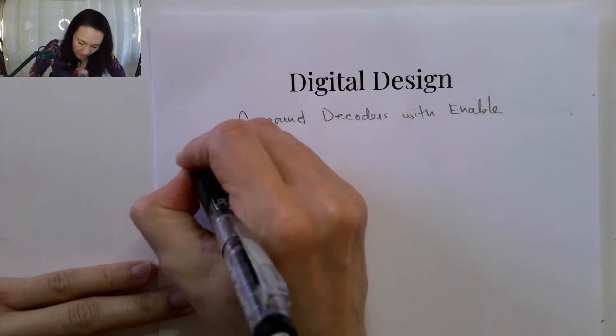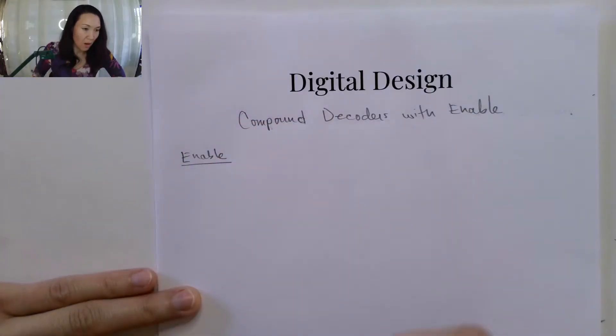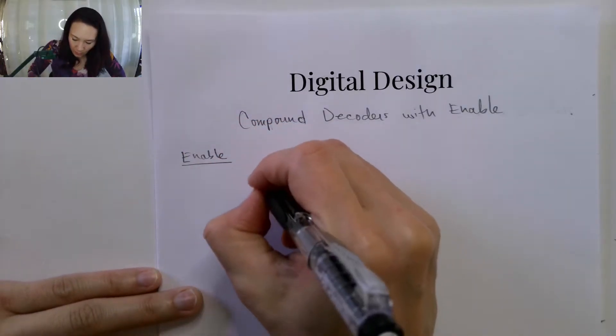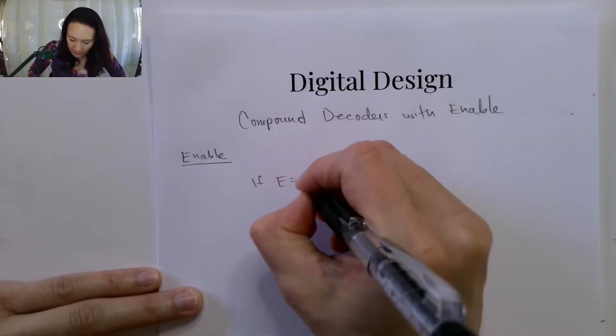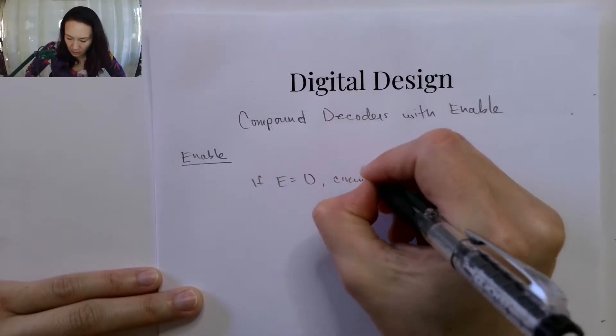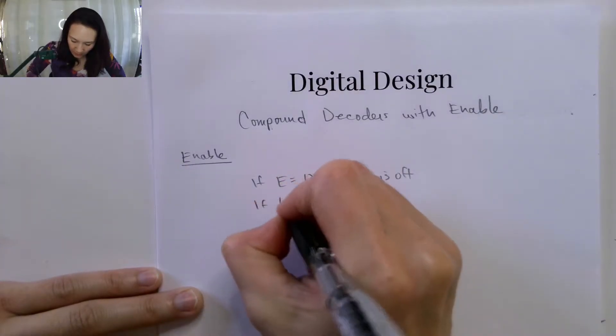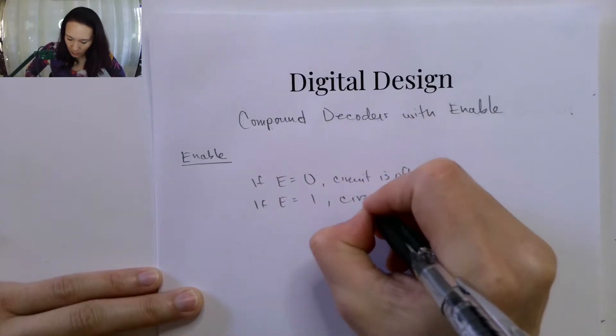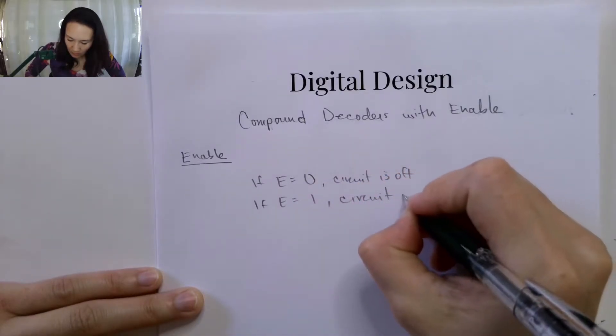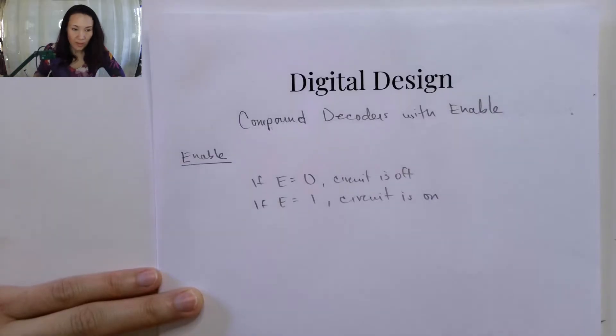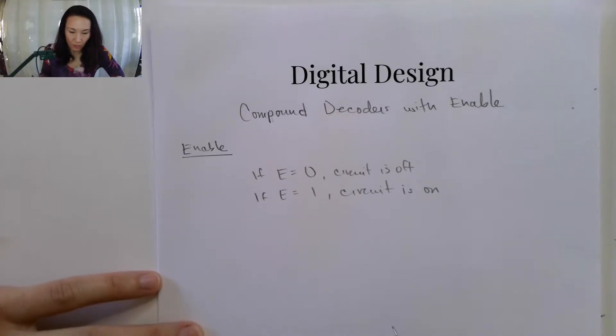So the way the enable works is it's basically like an on and off switch. If enable is equal to 0, we want our circuit to be off, and if enable is equal to 1, then we want our circuit to be on. So it functions similar to a multiplexer where depending on what enable is, it's going to basically switch a decoder on or off.